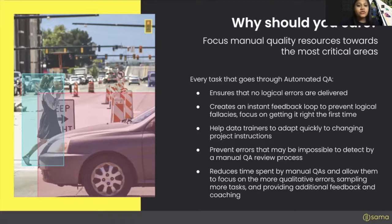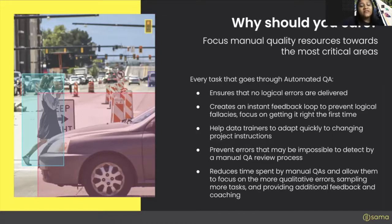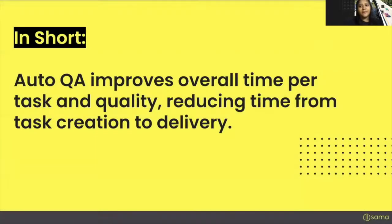Last but not least, AutoQA reduces the time spent by manual QA on a typical task, allowing them to focus on the more qualitative errors — clipping, false positives, missed objects — and sample more tasks, giving you more confidence in the dataset. That time can also be used to provide additional feedback and coaching to the team. Overall, the real goal of AutoQA is to improve overall time per task and quality — reducing the time from when the task was created by you to when you receive it back.